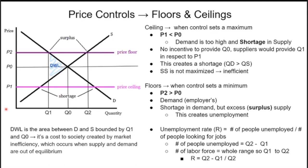Price controls come in two types: floors and ceilings. Counter-intuitively, the price floor is above and the price ceiling is below. The ceiling sets a maximum — you cannot go higher than this price, so P1 is smaller than P0. The price is set below equilibrium, demand is too high, and we have a shortage in supply. There's no incentive to provide the quantity at equilibrium, creating a shortage, so social surplus is not maximized — it's an inefficient model.